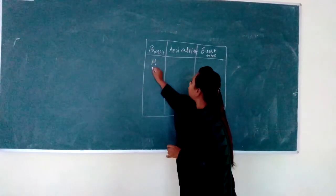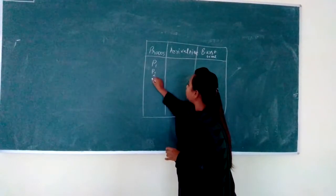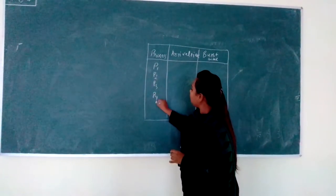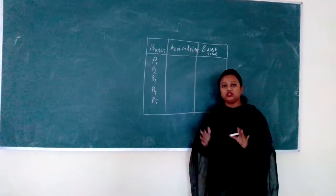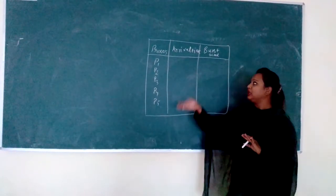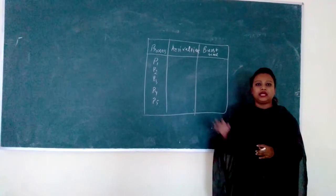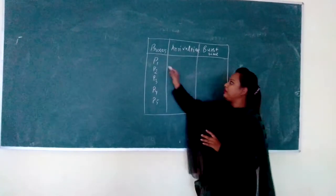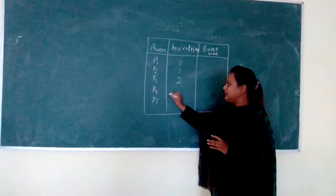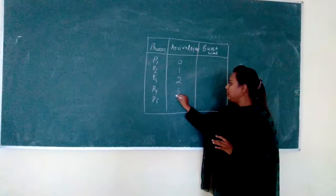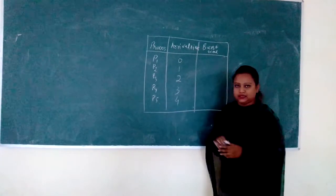Suppose there are five processes, P1, P2, P3, P4 and P5, and these particular processes have come in a particular duration of seconds. P1 has come at 0, P2 has come at 1, P3 has come at 2 seconds, P4 has come at 3, and P5 has come at 4 seconds.